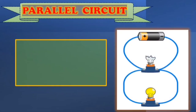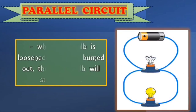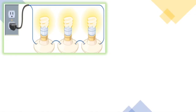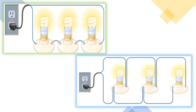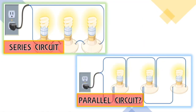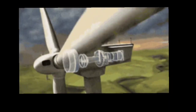So as I have said a while ago, when one bulb is loosened, taken, or burned out, the other bulb will still light up. So with this lesson, class, you can now answer which of these two is the series and the parallel. Picture one is the series circuit and this picture is the parallel circuit.